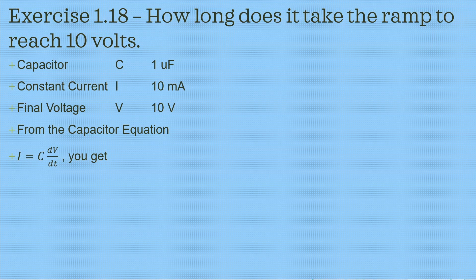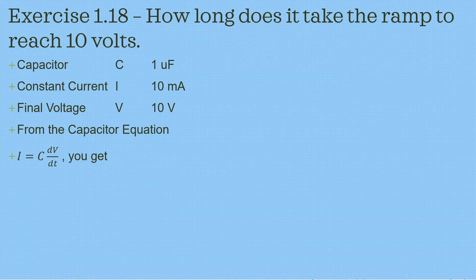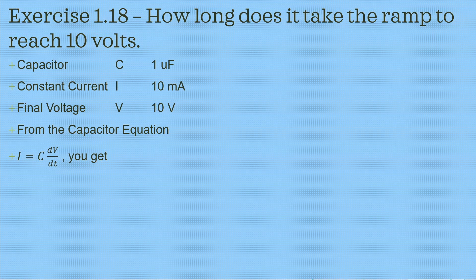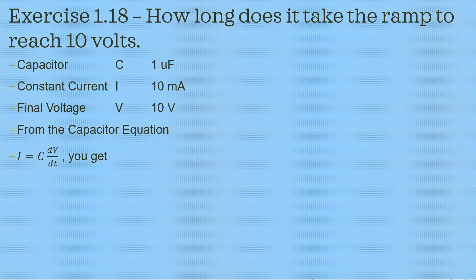We are given a capacitor equation in the question, or just the text above the question, that tells you that the current is equal to the capacitance times the change in voltage over change in time, or the difference in voltage over the difference in time.